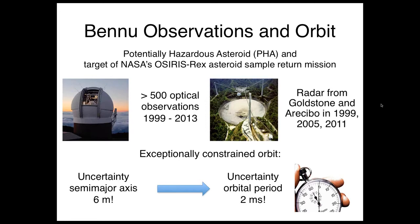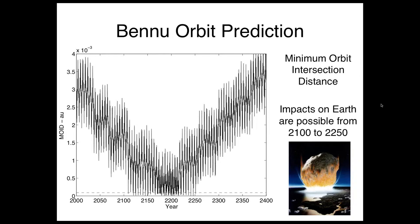This allows us to compute the trajectory of Bennu with the orbital uncertainty of only 6 meters in semi-major axis. That translates to an uncertainty in the orbital period of about 2 milliseconds for a 1.2-year orbital period. The position uncertainty of the asteroid is actually quite good, at the few-kilometer level at the current time.